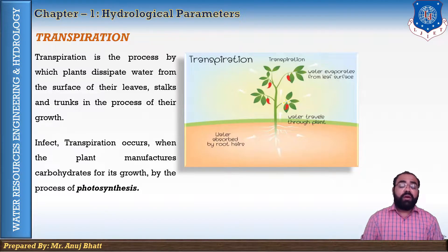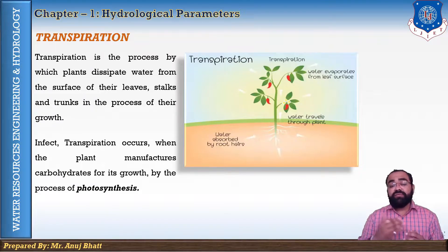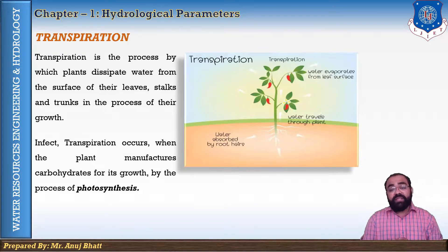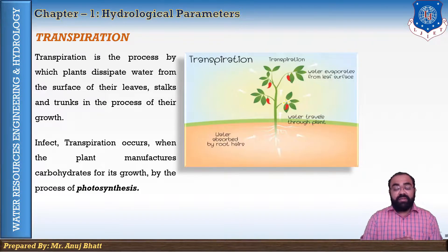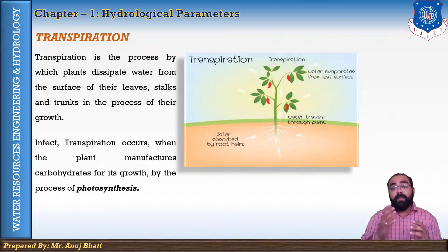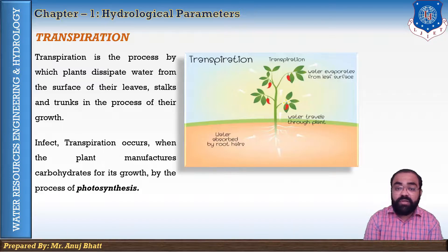Transpiration mainly occurs when the plant manufactures carbohydrates for its growth through the process of photosynthesis. The water extracted by the plant roots from the soil mass is transferred to the plant leaves. In the photosynthesis process, air enters the stomata openings in the leaf surface, and the chloroplasts within the leaf utilize carbon dioxide from the air along with a very small amount of moisture to manufacture carbohydrates.